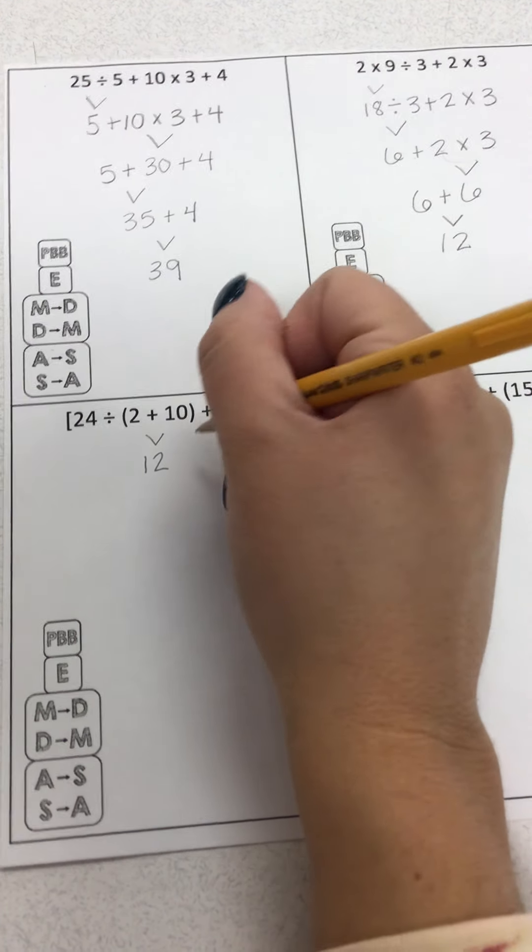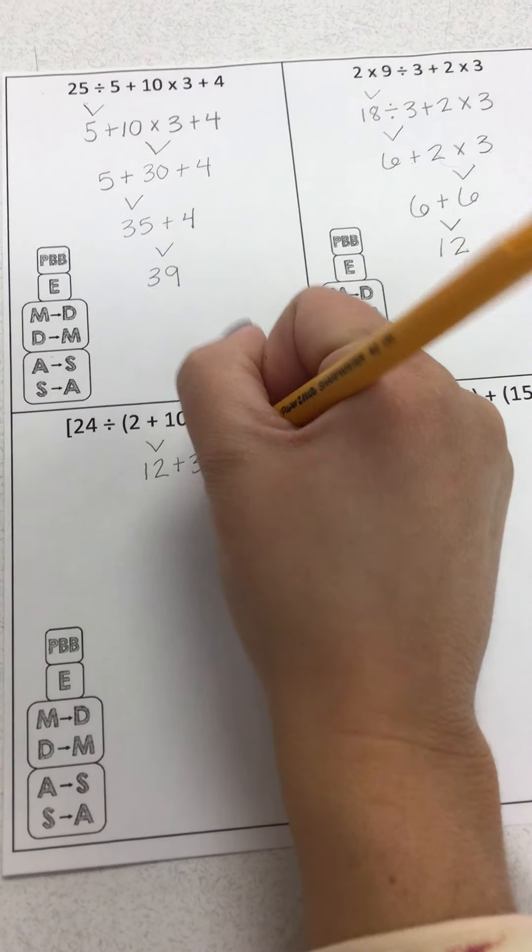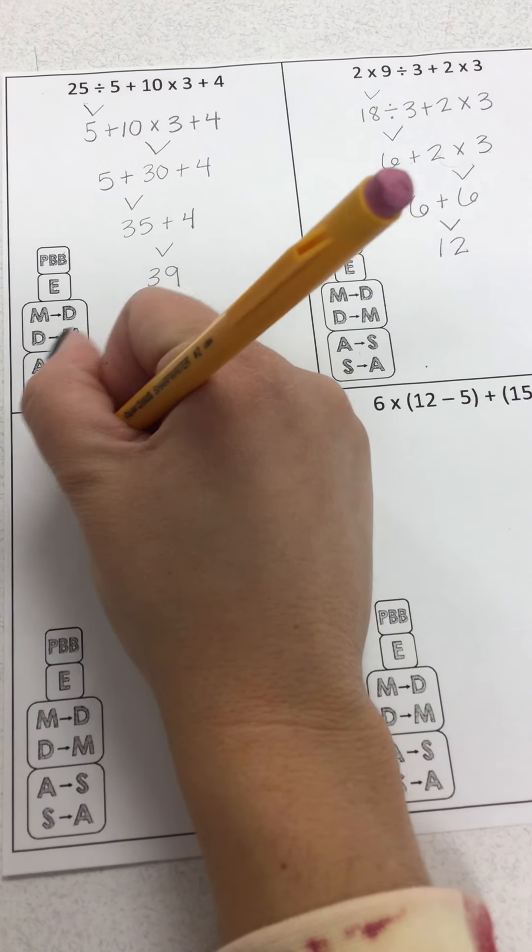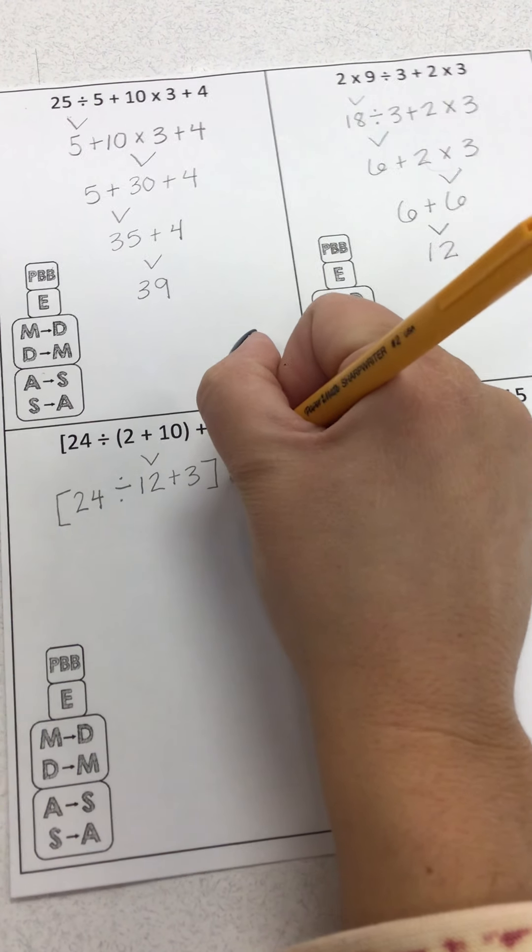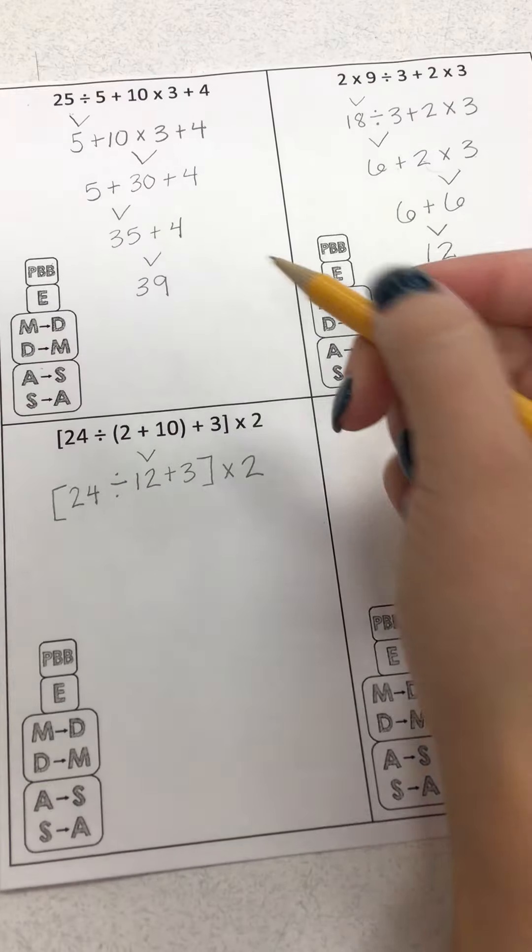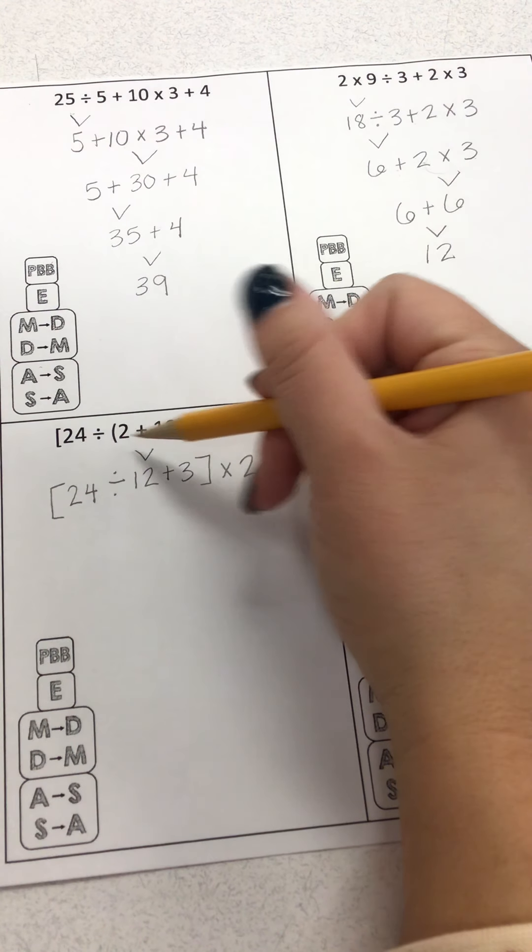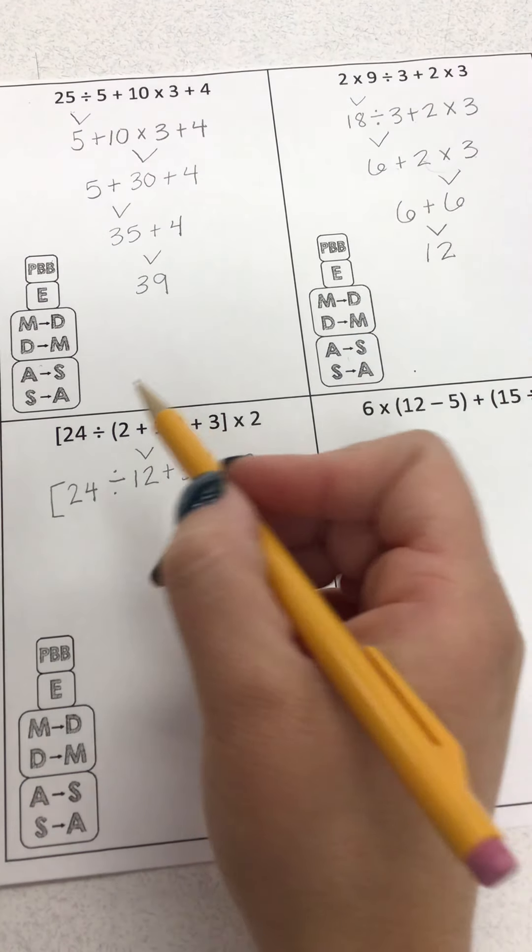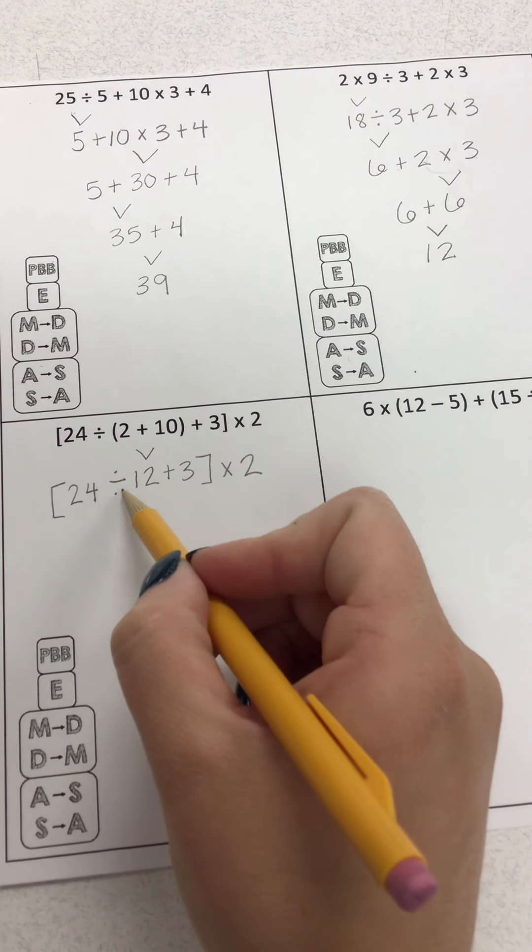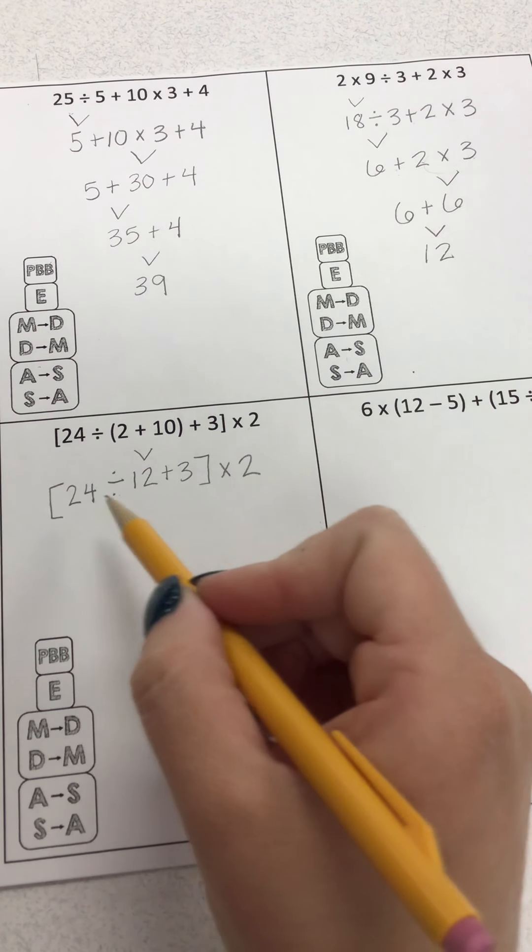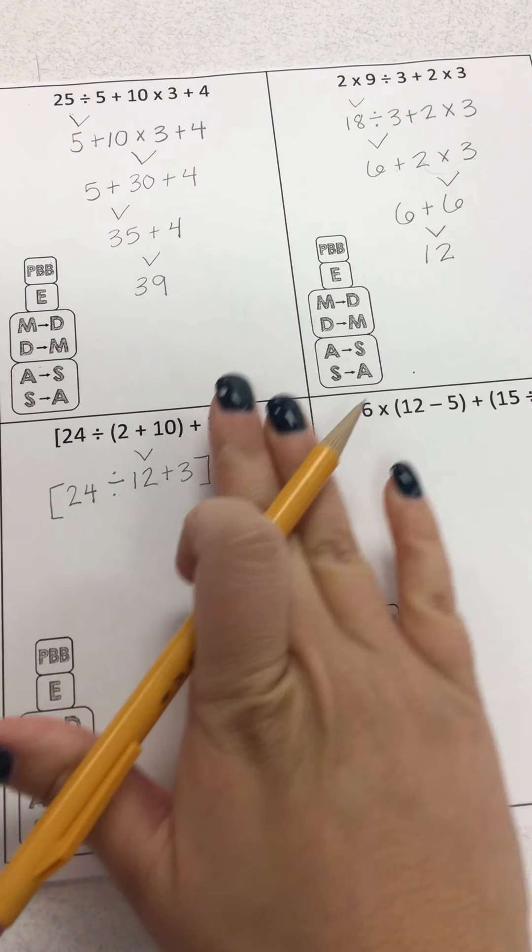So 10 plus 2 is 12. I'm going to bring everything down, including my brackets. So 10 plus 2 is 12. I solved that. I brought it down. I got rid of my parentheses. My parentheses are gone. But I still have my brackets. So I do everything inside of my brackets before I move outside of the brackets.